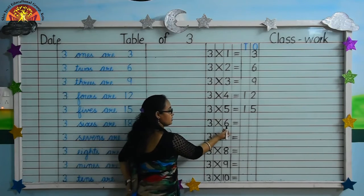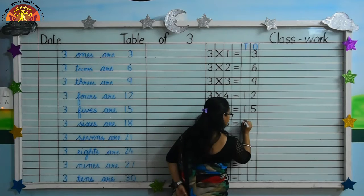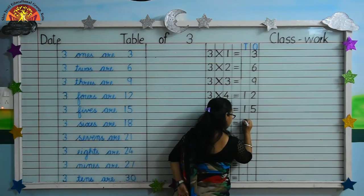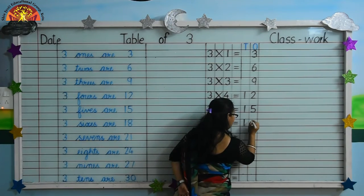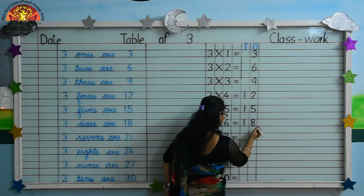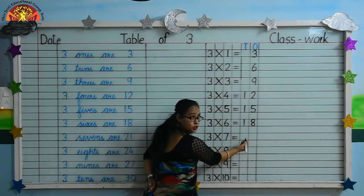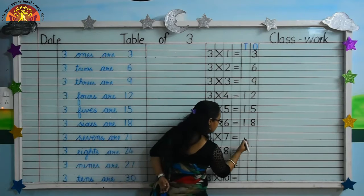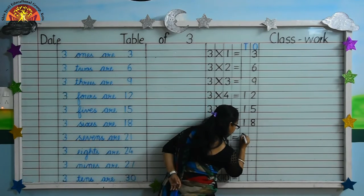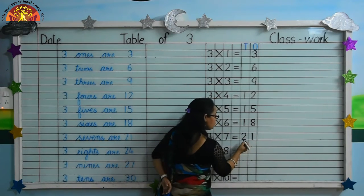Three sixes are eighteen — write eighteen. Three sevens are twenty-one — write two, one — twenty-one.